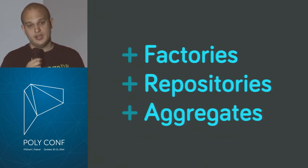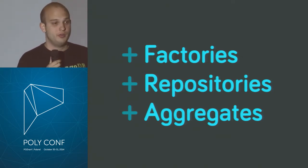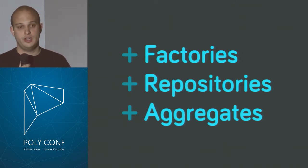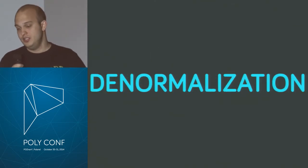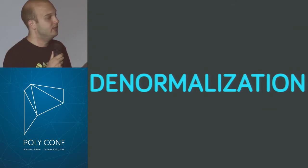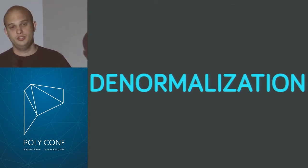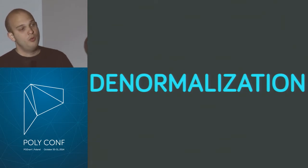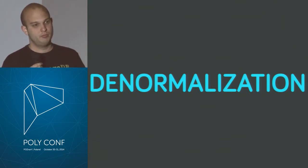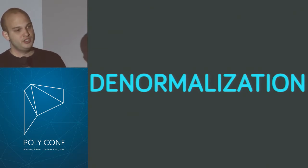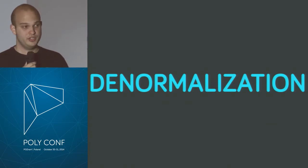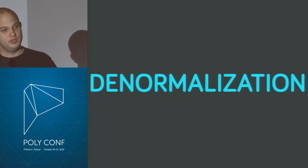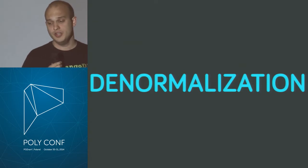Then we have aggregates — a connection of one entity with one or more value objects, for example a person with the address they live in. Eric Evans suggests that if you have an aggregate, you should denormalize it. Because of the immutability of value objects, we can copy the object as many times as we want. If one person moves to a new location, you probably don't want all people at that location to move as well. So we can denormalize at that point.